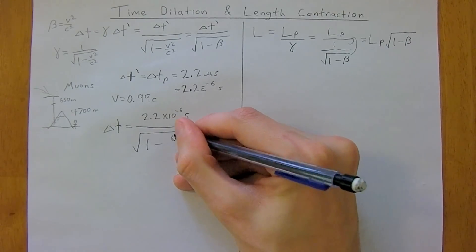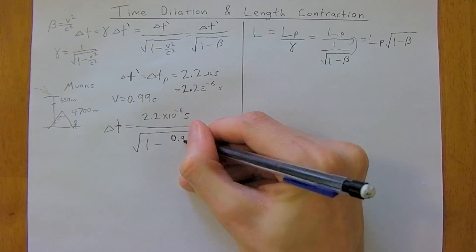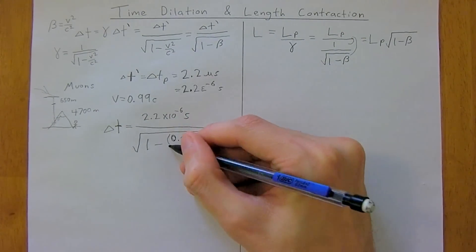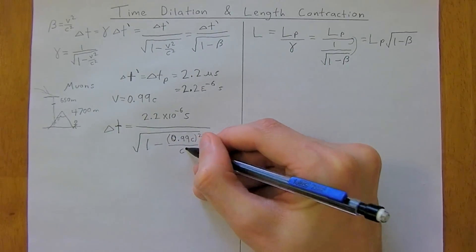So, we've got our velocity as 0.99c. Of course, that is all squared. Divide it by c squared.